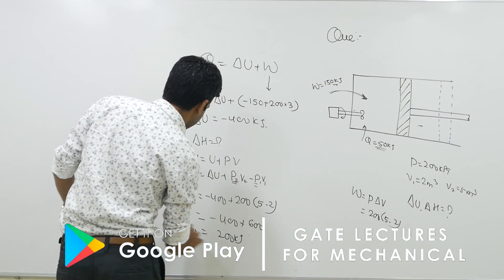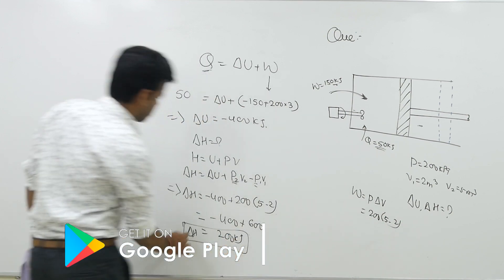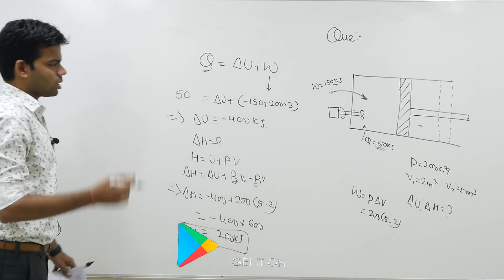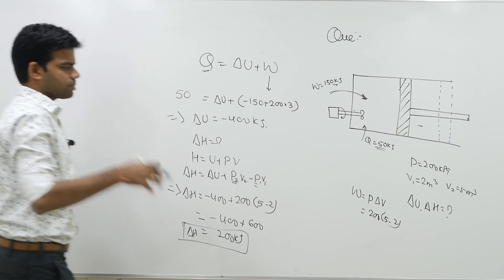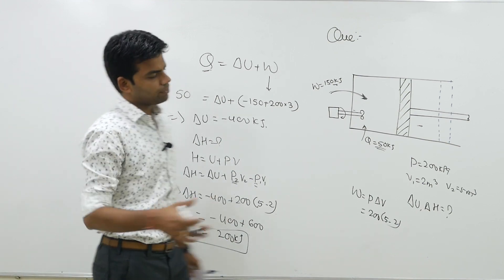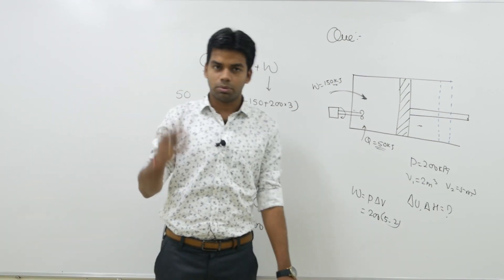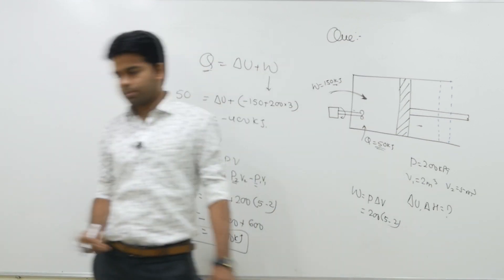So this is the value of change in enthalpy — plus 200 kilojoule. It was a very simple question. I hope you were able to solve it. Thank you so much, all the best.